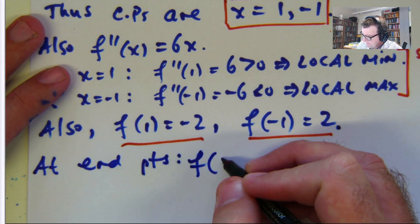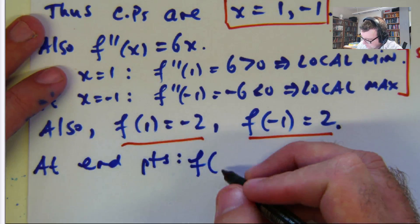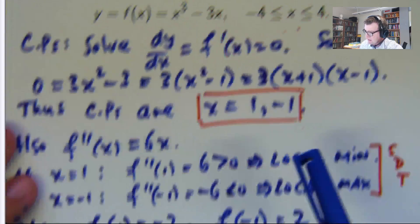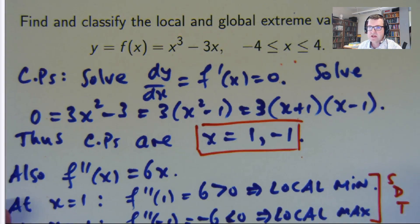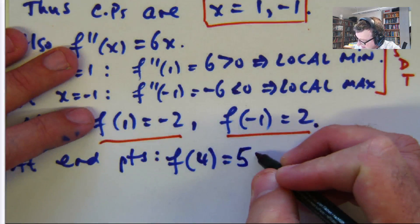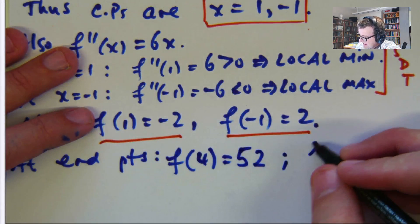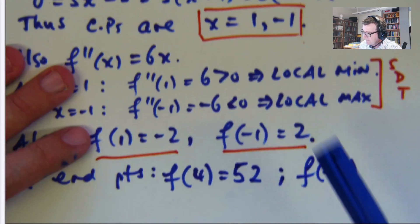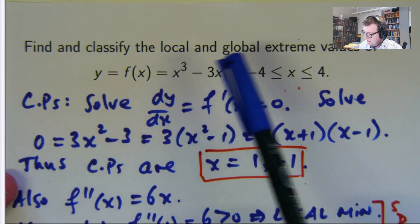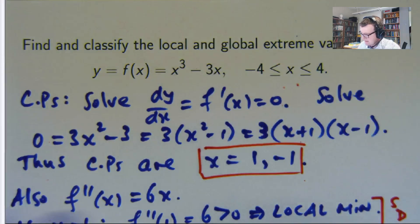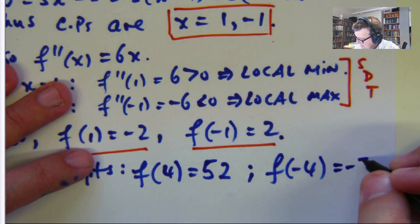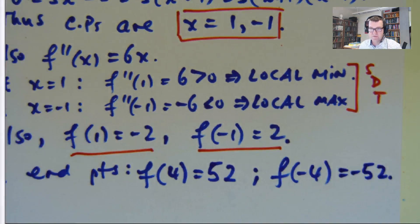So f of, let's go with 4 first. So you put x equals 4 in here, you get 4 cubed minus 12. That's going to be something like positive 52, according to my calculations. And if you put in f of negative 4, you'll get negative 4 all cubed plus 12. So that's negative 52.